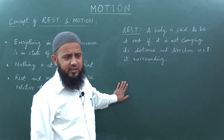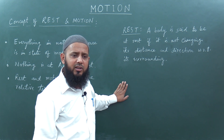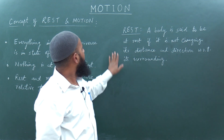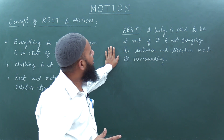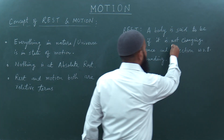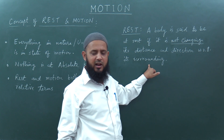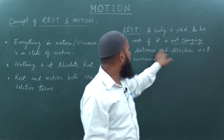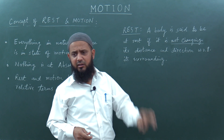Rest is an important concept which must be defined in the study of physics. We need to define rest ourselves because we have made concepts like distance, displacement, and velocity. The definition is: a body is said to be at rest if it is not changing its distance and direction with respect to its surroundings. If both direction and distance are not changing with respect to surrounding objects, then we can say it is at rest.